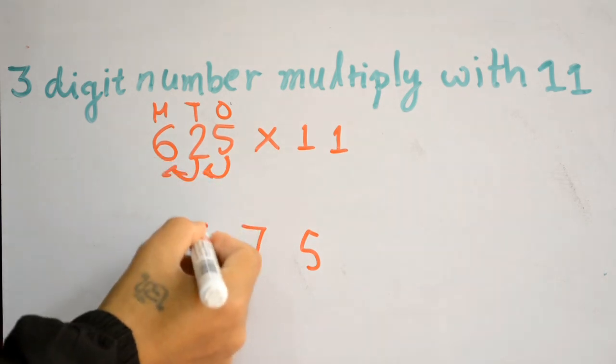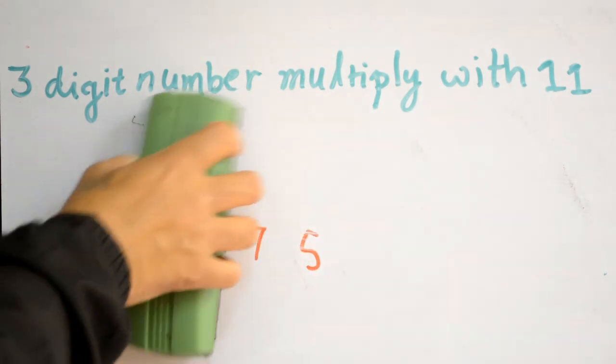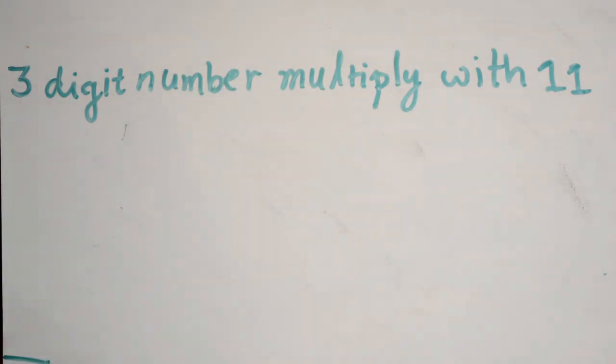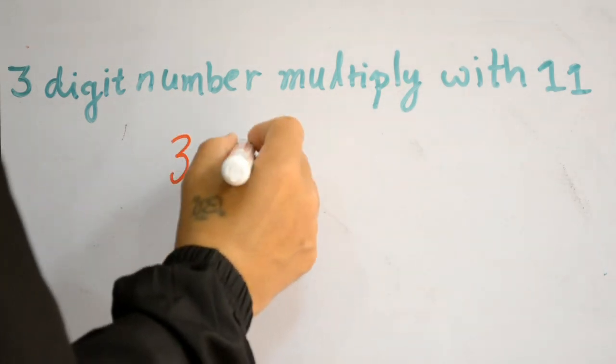So the answer is 6,875. Let's see another example: 361 times 11.